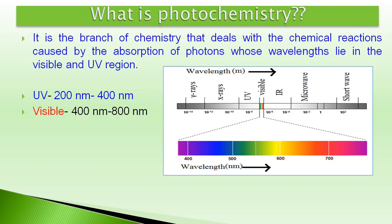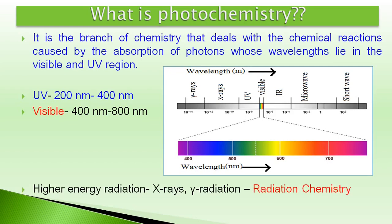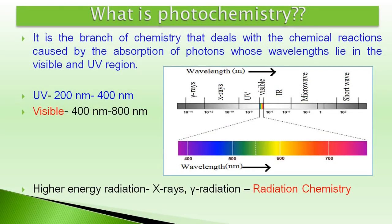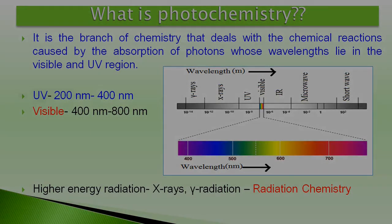Ultraviolet radiation 400 nanometer se kam wavelength waala hota hai, jabki visible radiation 400 nanometer se 800 nanometer wavelength ka hota hai. As I told, higher energy radiations like x-rays and gamma radiations are also capable of inducing chemical reactions. But those chemical reactions induced by x-rays and gamma radiations are studied in another branch of chemistry known as radiation chemistry.